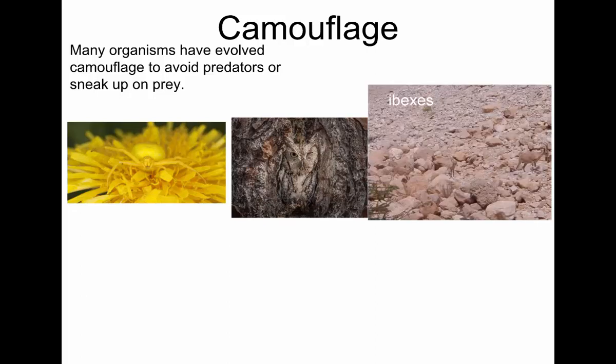These are ibex — a deer-like creature that lives in the Middle East in dry, rocky conditions. You can see there's three of them in this picture. One here sideways, one sort of facing you right here, and then there's a third one — they're nearly invisible against the rocks.